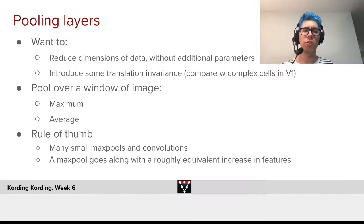We wanted to introduce some translation invariance. Compare that with what we learned about complex cells all the way in the beginning. And we are able to do that. So now we pool over a window of the image. We use max pooling here. We could have used average pooling, but max pooling seems very meaningful in this context.